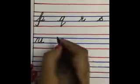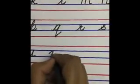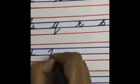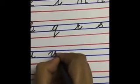Again from the middle of the second line, you will start and finish it on the top of the second line. This is small letter V.